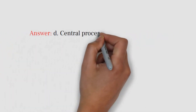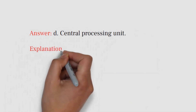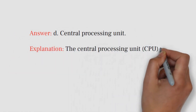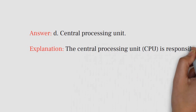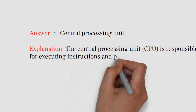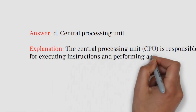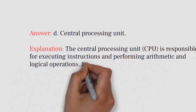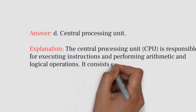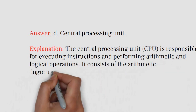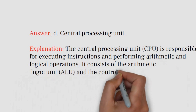Answer: D. Central processing unit. Explanation: The central processing unit (CPU) is responsible for executing instructions and performing arithmetic and logical operations. It consists of the arithmetic logic unit (ALU) and the control unit.